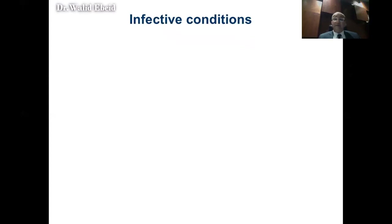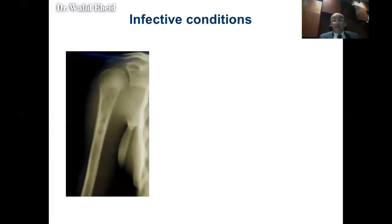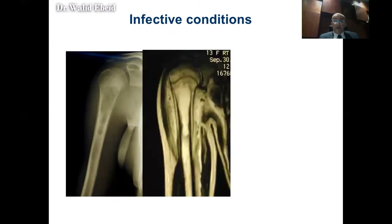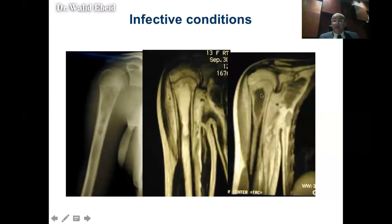Infection is the great mimic for tumors. This patient presented with shoulder pain; x-ray showed an osteolytic lesion of the proximal humerus. The differential diagnosis should definitely include Ewing sarcoma and osteosarcoma. The MRI confirms a destructive lesion inside the bone with soft tissue extent outside. With contrast, you can see central necrosis and peripheral enhancement, which raises suspicion of infection. This turned out to be osteomyelitis, although this differential diagnosis should not be settled without a biopsy and culture.